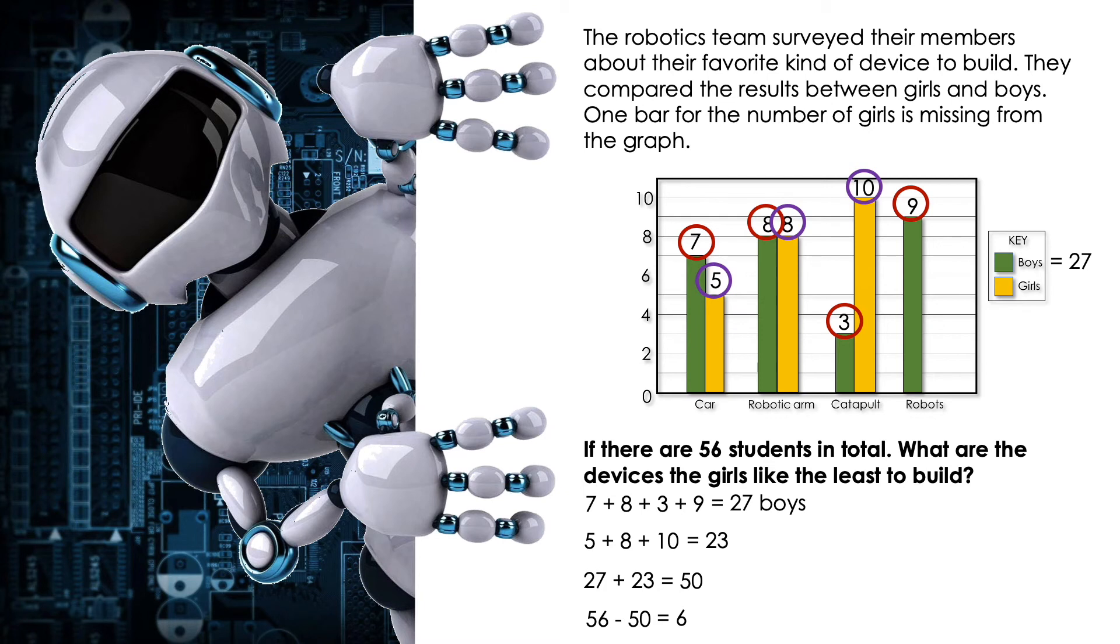So to answer the question, what are the devices the girls like the least to build? Is it robots, catapults, robotic arms, or cars? Yes, cars. With only five girls, because six girls selected robots.